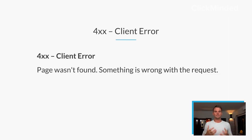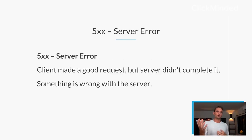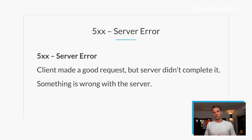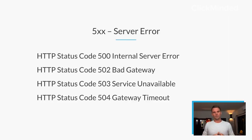400 block errors are for client errors — that means the page wasn't found or something is wrong with the request on the client side. A 400 might be a bad request, 401 unauthorized, 403 forbidden. Any status code that comes in as a 400 is a client error. Finally, 500 block server errors mean the client made a good request but the server didn't complete it. Something is wrong on the server side — like a 500 internal server error, 502 bad gateway, 503 service unavailable, 504 gateway timeout. 500 errors are server problems, not client problems.